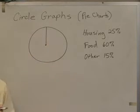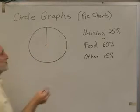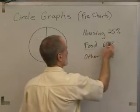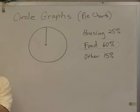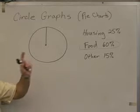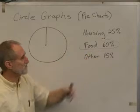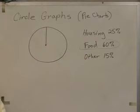It doesn't really matter what order you do these in, but I would suggest doing the biggest one first. I'm not going to measure with a protractor and make sure you have it exactly, as long as it's reasonable. So I'm looking at this 60%, and I'm saying, is that more than half or less than half?